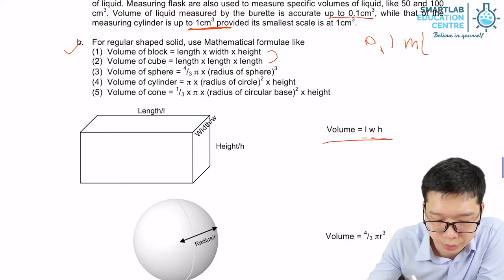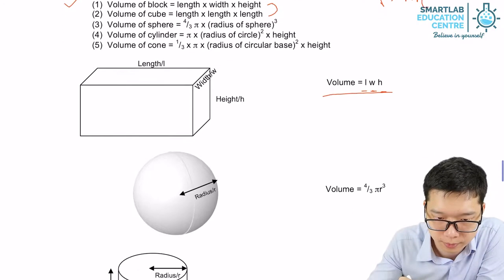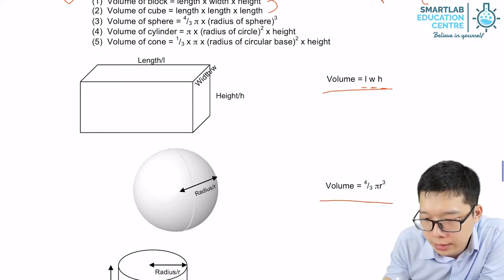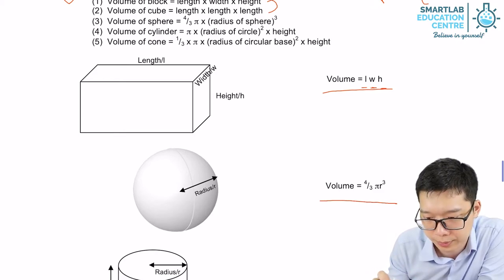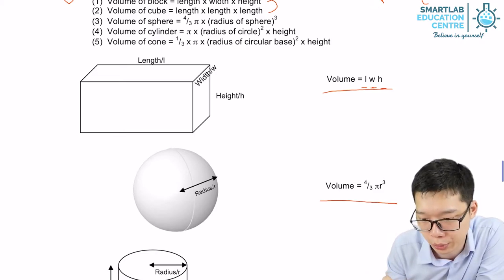Next, if you're talking about sphere, sphere is 4 over 3 pi r cubed. 4 over 3 pi r cubed.